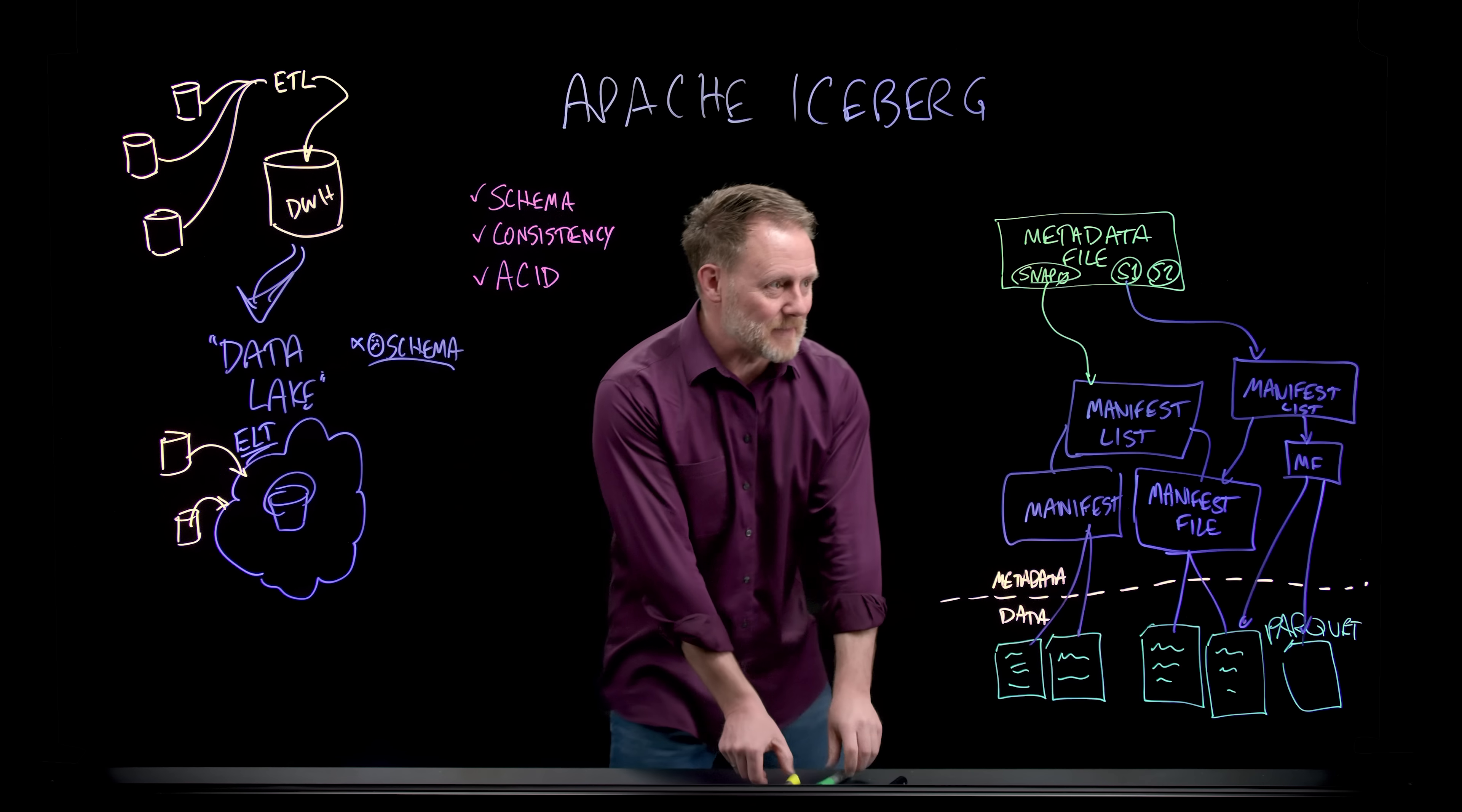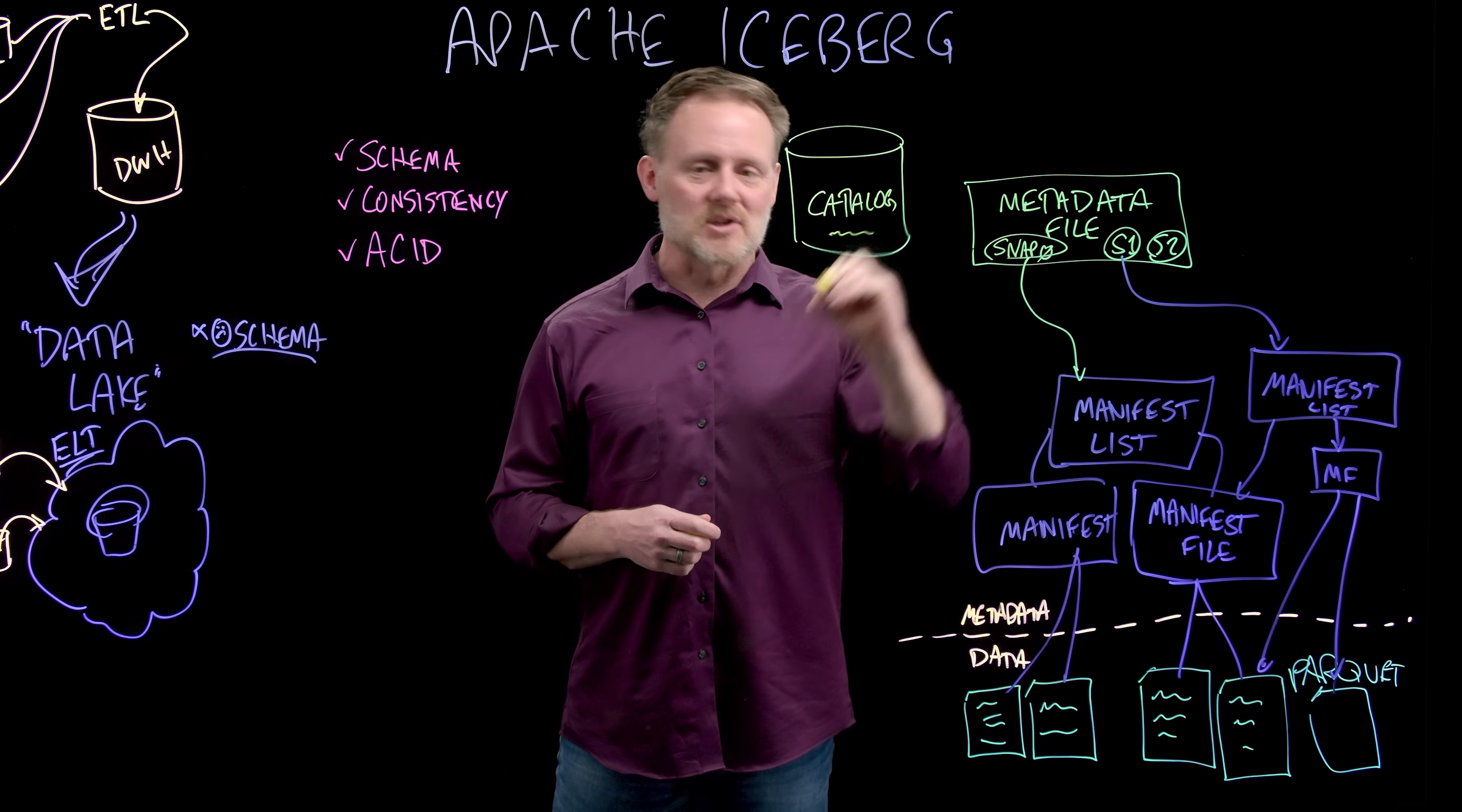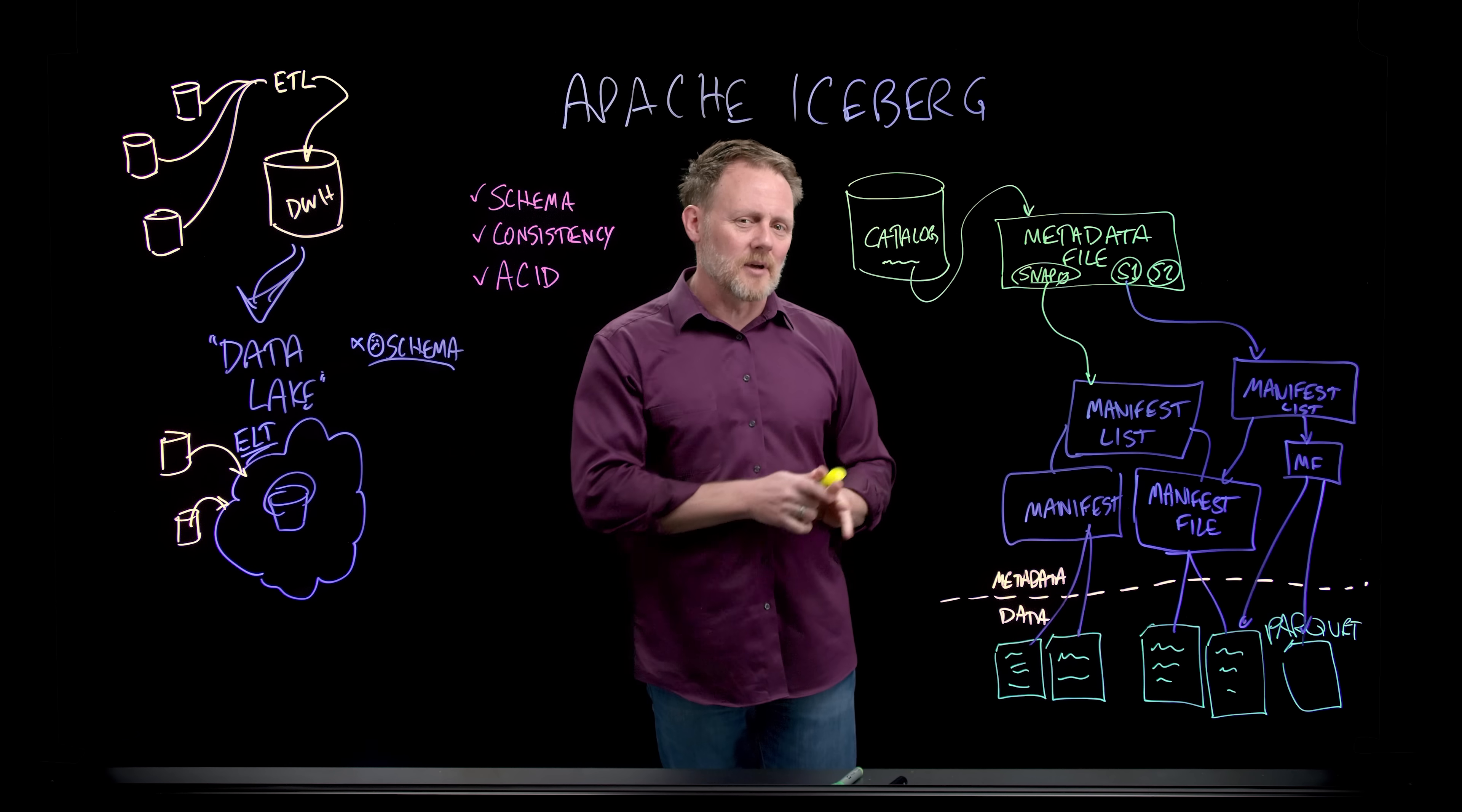One more component we'll put on top of that. We'll just call this the catalog, which in summary is going to tell me my table, say the table is named thermostats or something like that. Well, okay, that thermostat table name, that's this metadata file. And that tells us where to go from there. So it's my way of looking things up in my Iceberg data. So that's the basics in terms of logical architecture of Apache Iceberg.